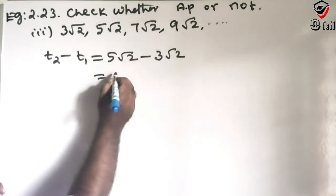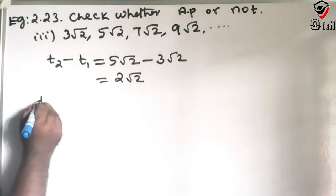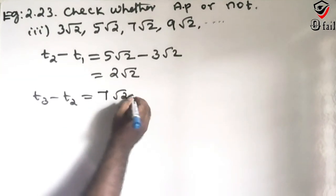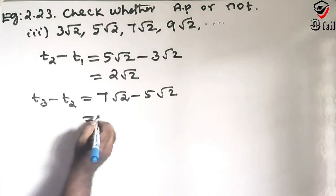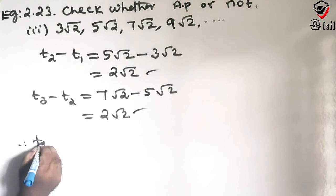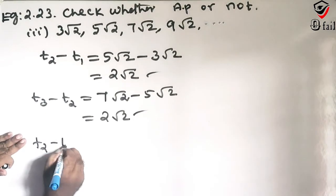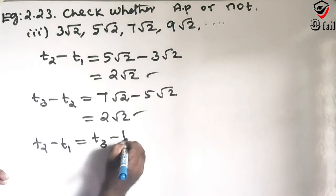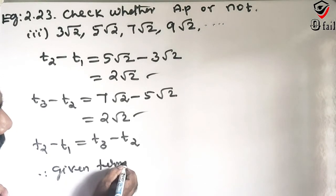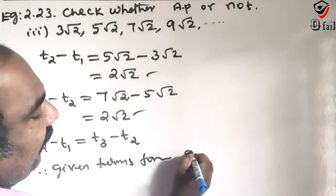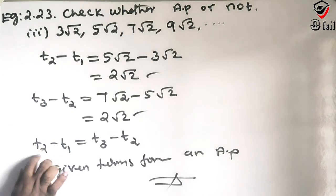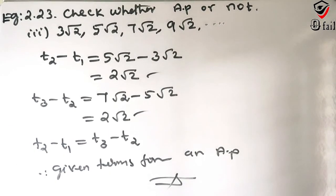T2 minus T1: 5 root 2 minus 3 root 2 equals 2 root 2. T3 minus T2: 7 root 2 minus 5 root 2 equals 2 root 2. Since T2 minus T1 equals T3 minus T2, the given terms form an AP.